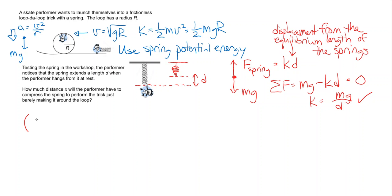So what we need to do now is apply conservation of energy. We'll say K plus U of gravity plus U of the spring at the launch is equal to K plus U of gravity plus U of the spring at the top of the loop.